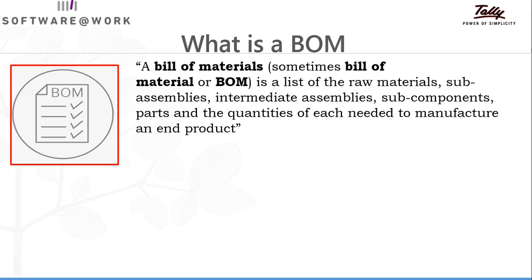A Bill of Material — sometimes called a BOM — is a list of raw materials, sub-assemblies, intermediate assemblies or sub-components, and the quantities of each needed to manufacture a finished product. To manufacture the final product, we need the list of raw materials. Using this Bills of Material, the final product gets manufactured and all raw materials and sub-assembly or intermediate products get consumed.